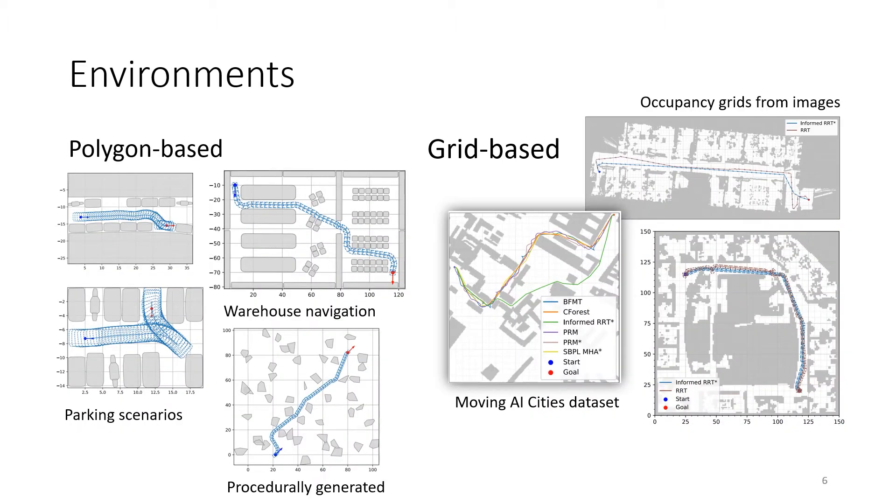As part of the motion planning components, we provide different types of environments. Polygon-based environments represent obstacles as convex polygons, which can be loaded from vector graphics files, such as SVG files. Grid-based environments represent obstacles as grid cells that are either occupied or free, and can be loaded from grayscale image files.